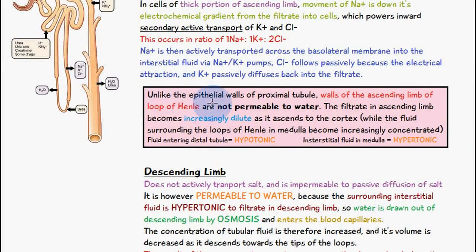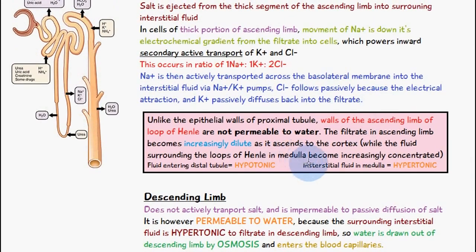Unlike the epithelial walls of the proximal tubule, the walls of the ascending limb of the loop of Henle are not permeable to water. So the filtrate in the ascending limb becomes increasingly dilute as it ascends to the cortex, while the fluid surrounding the loop of Henle in the medulla becomes increasingly concentrated. The fluid entering the distal tubule is therefore hypotonic, and the interstitial fluid in the medulla becomes hypertonic, or more concentrated.